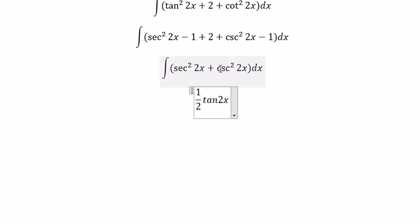The integral of csc²2x, you got about negative 1 over 2 cot2x plus C.